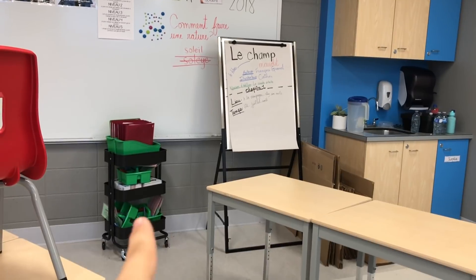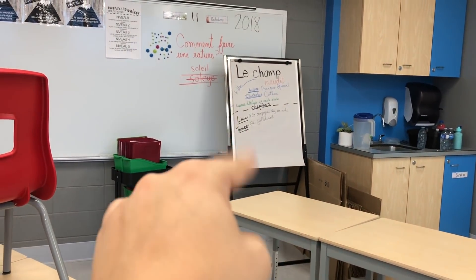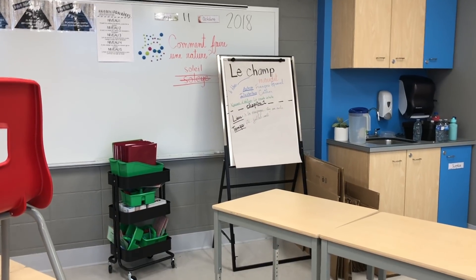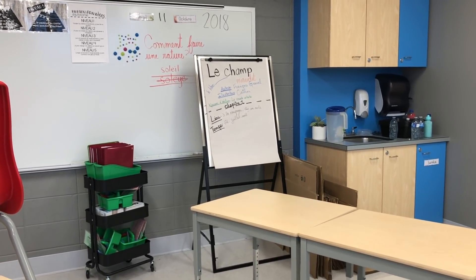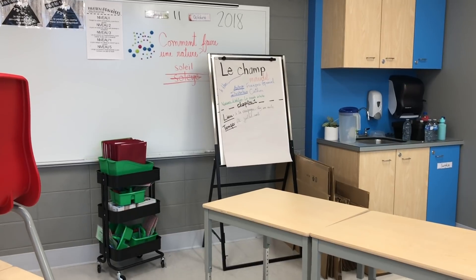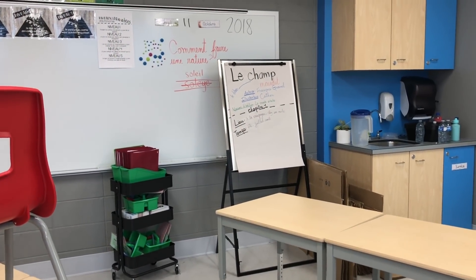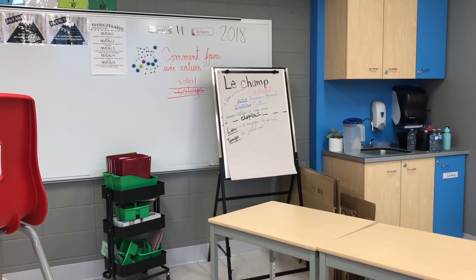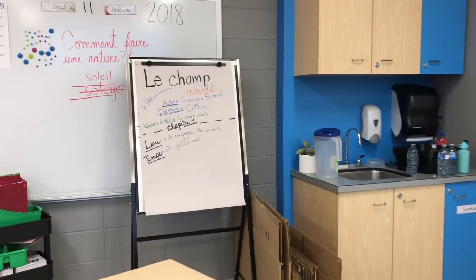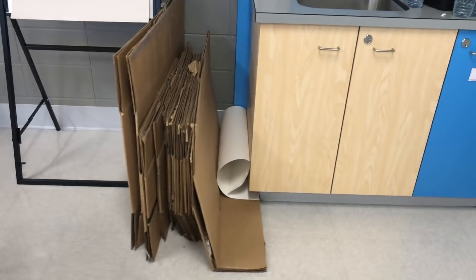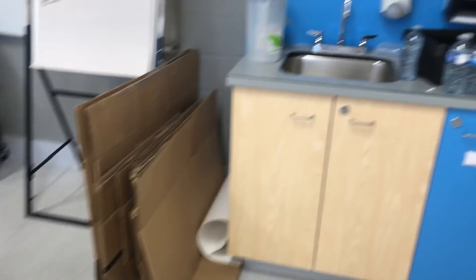J'ai là mon chariot d'atelier d'écriture que je vais vous expliquer dans pas long. J'ai un tableau blanc avec un pad de feuilles par-dessus, fourni par l'école. On a travaillé le schéma narratif, les personnages et le temps et le lieu dans un récit jusqu'à maintenant. J'ai mon tas de boîtes de carton que j'accumule pour faire des isoloirs — un jour, je vais avoir le temps de faire ça.